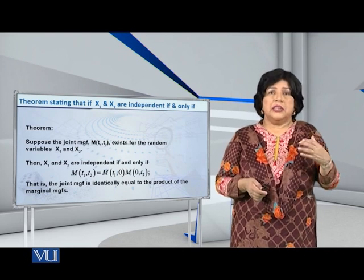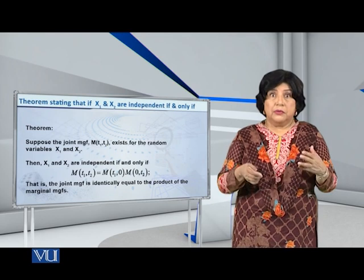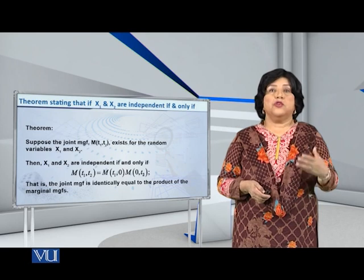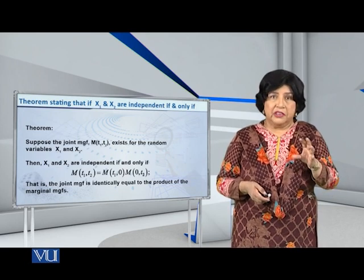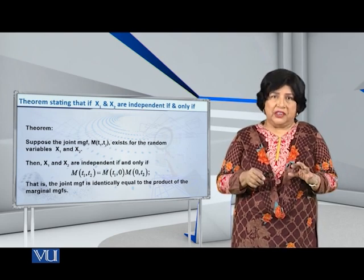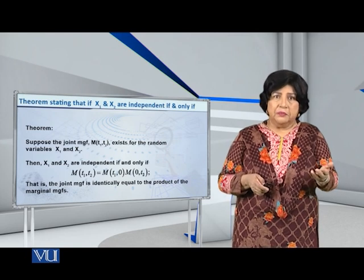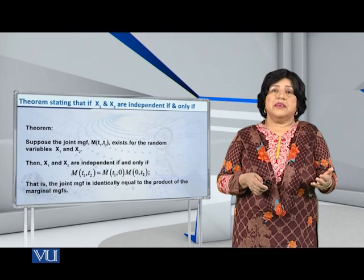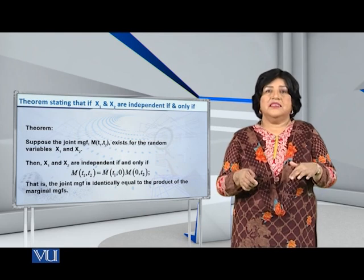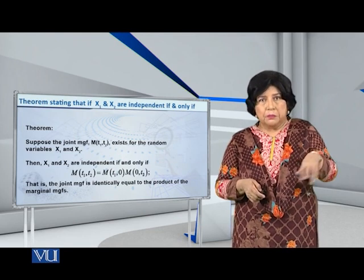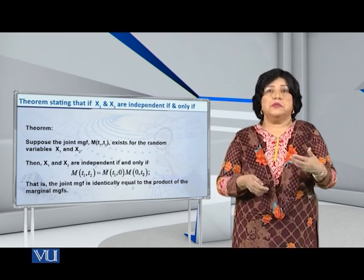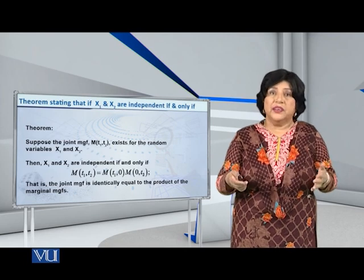In order to prove this, we note that the statement says 'if and only if,' so we have to prove it from both sides. First, we will assume that X1 and X2 are independent and show that the equation holds. After that, we will assume that the equation holds and then show that X1 and X2 are independent.